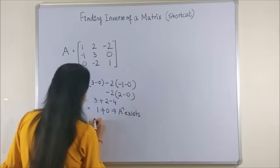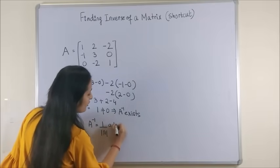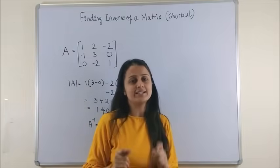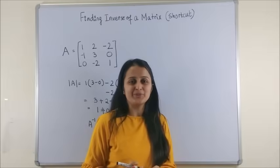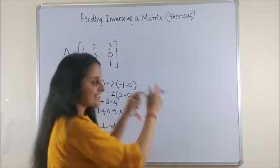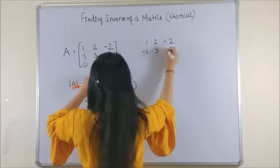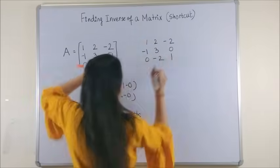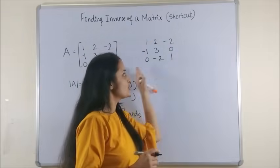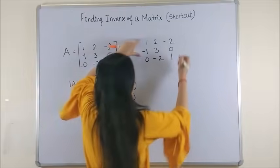We know A inverse is 1 over determinant of A into adjoint of A. Now adjoint of A is something which is mostly tedious. Let's make it simple for you. The first thing we do is copy the entire matrix as it is. Next, you know the vertical lines are the columns and the horizontal ones are the rows. So you repeat the first two columns as they are.